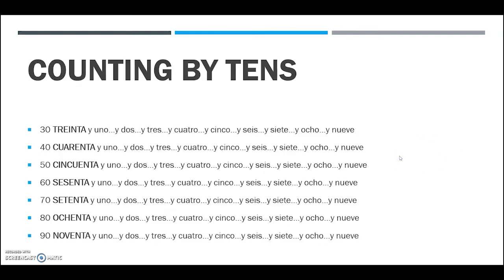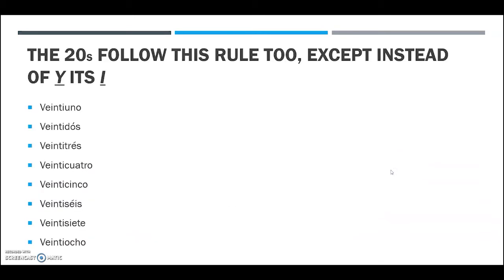Here is a sheet of the tens and how you can count all the way up to 99. If you need to refer to it, you can pause or click back on this video anytime. We've got 30, 40, 50, 60, 70, 80, and 90 — all the numbers you need to count all the way up to 100.